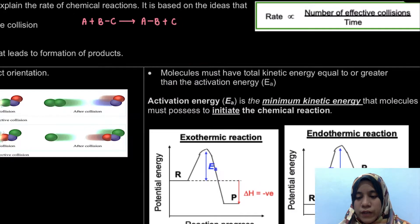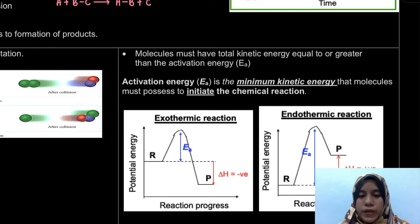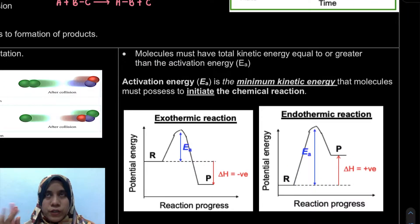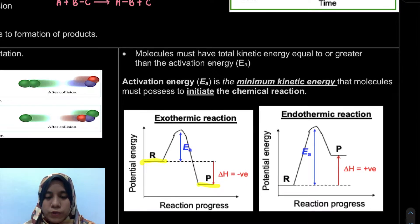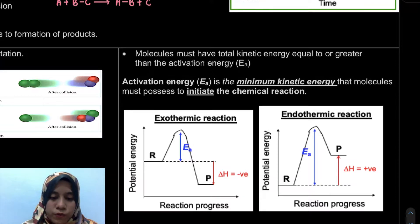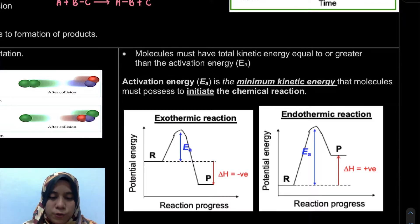Here we have two energy diagrams which we will look at in detail later. For example, here is our reactant and here is our product. Before the reactant changes to product, it must pass through a higher energy state — and before that change occurs, it must have energy equal to or greater than the activation energy.